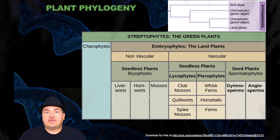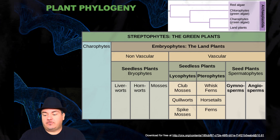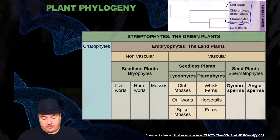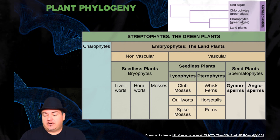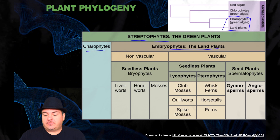Recall back in the lectures on the protists, we learned about the Archaeoplastidae, and we talked about how the green algae — in particular the charophytes — are the closest living relatives of the land plant. Today we're going to talk about the land plants, whereas we talked about the algae in the protist chapters. The charophytes, which are a type of green algae, and the land plants together form a group called the streptophytes, which includes the charophytes and the embryophytes.